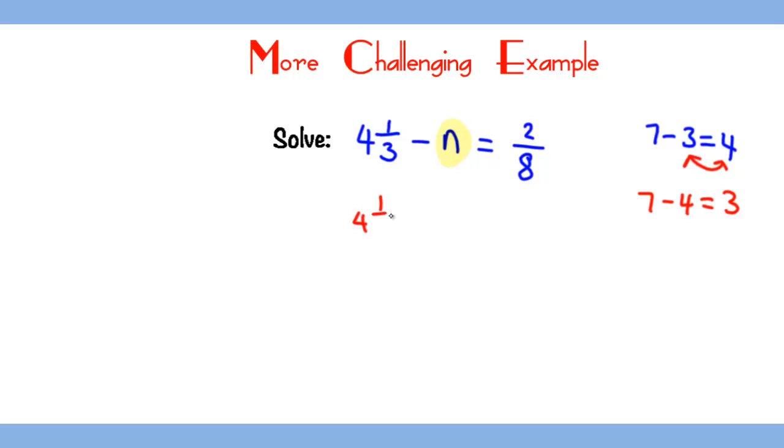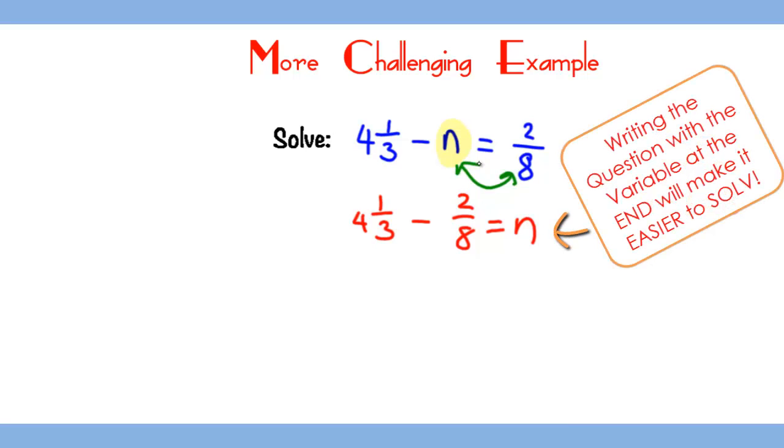So I can rewrite this as 4 1/3 - 2/8 = n. Notice how I have just switched the order of the two numbers. This became a straightforward question that you can solve.